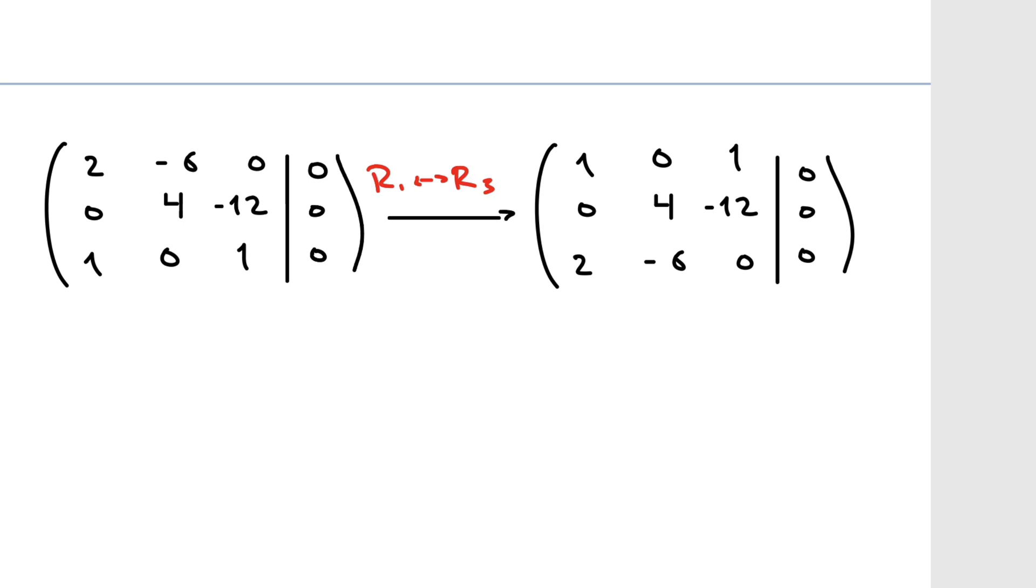Anyways, we have to solve this system. Or do we have to solve it? We're actually trying to find out if there's exactly one solution or not. Let's start out by trying to solve it, okay? But honestly, we can stop quite soon. So I want to swap the first and third row because I don't like this two up here.